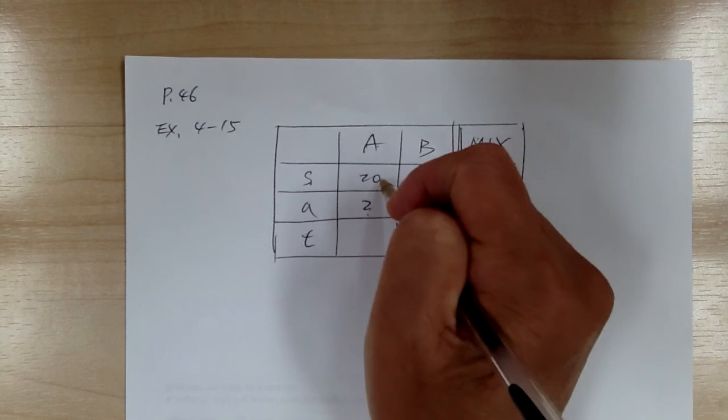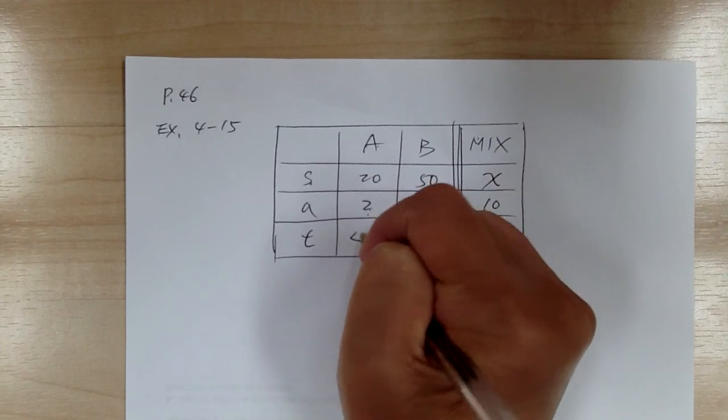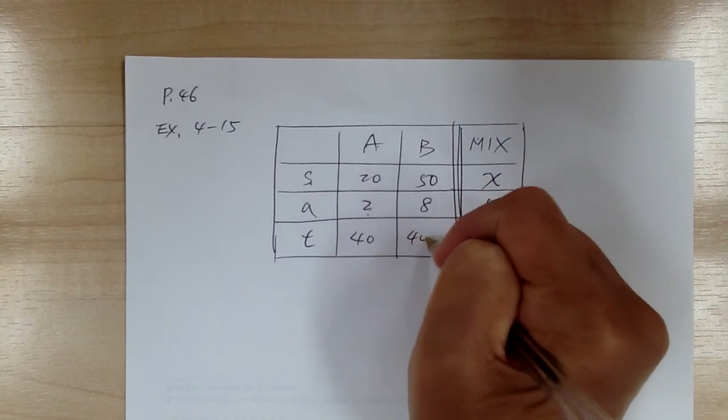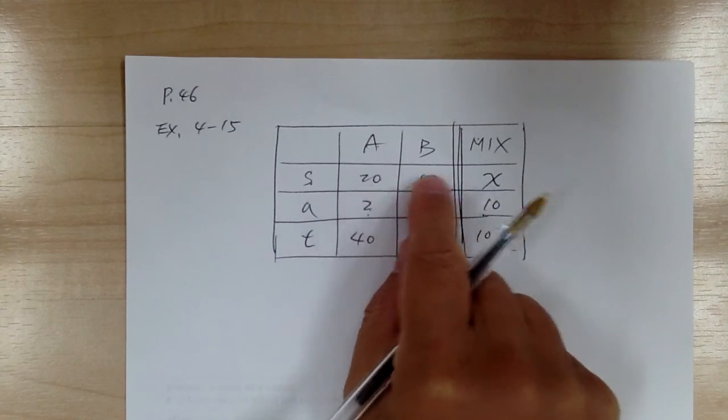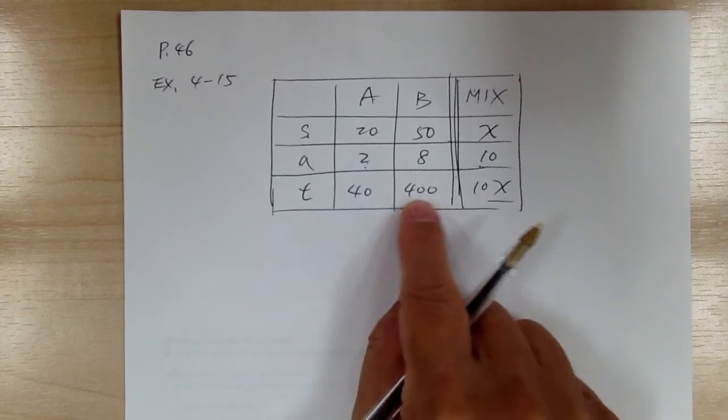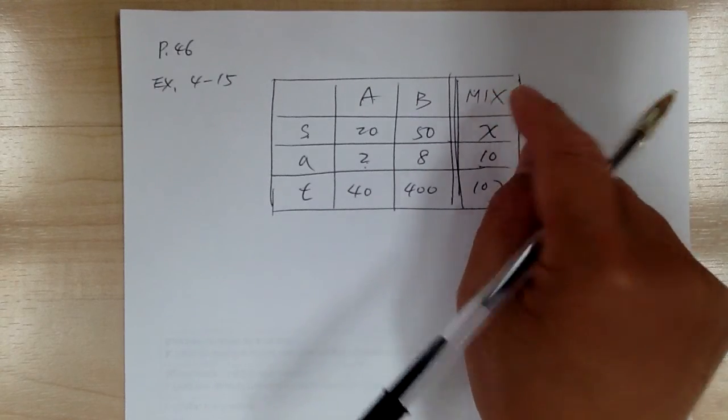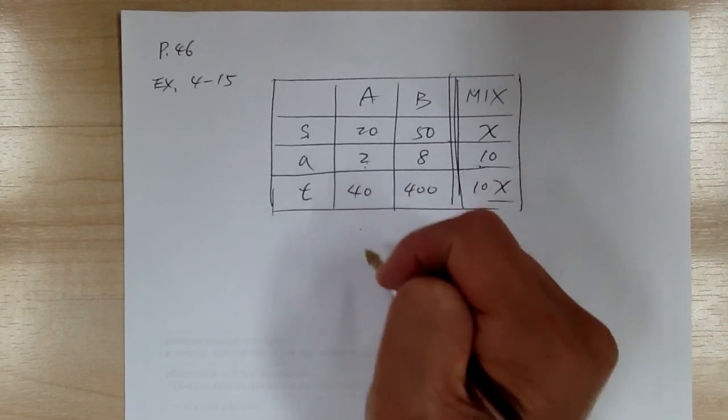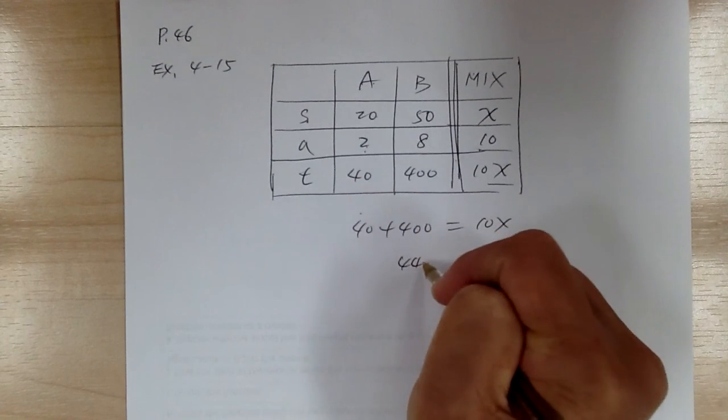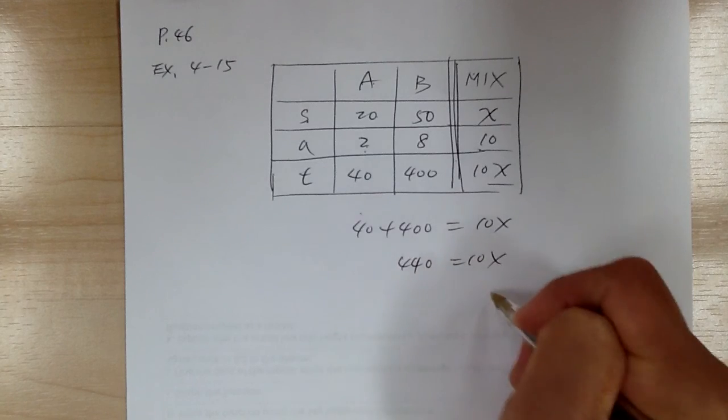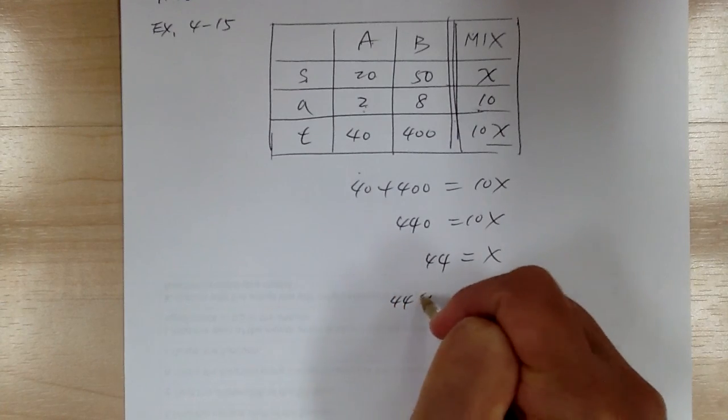Now the 2 liters times 20%. So this is going to give you the amount of acid. So multiply, multiply, multiply. So this is the amount of acid. Remember I dropped the percent already, right? So this would be the acid in A, acid in B, and acid in the mix. So here's your equation. So 40 plus 400 equal to 10X. So we got 440 equal to 10X. So X equal to 44. So the concentration is 44% solution.